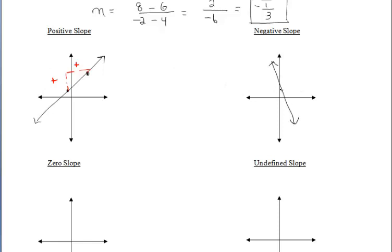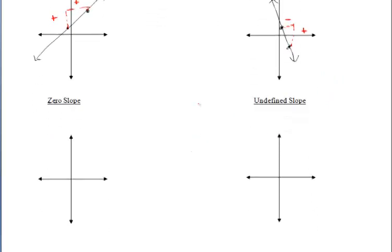For a negative slope, the line is going to be decreasing from left to right. So if we chose two points there and did rise over run, we'd rise up which is positive, but go to the left which is negative. So a positive divided by a negative is a negative slope.